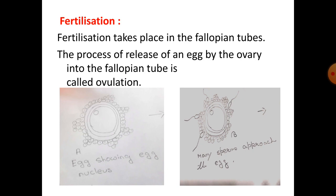Next is fertilization. Fertilization is a process that takes place within the fallopian tube. The process of release of an egg by the ovary into the fallopian tube is called ovulation.